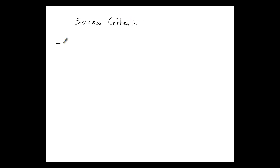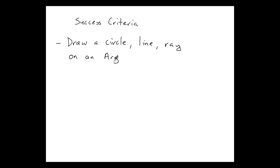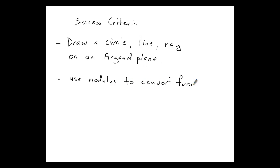To summarise the success criteria: you should be able to draw a circle, a line, and a ray on an Argand plane, and you should be able to use the modulus to convert from polar form into Cartesian form. If you can do all of that, then this presentation has been successful.